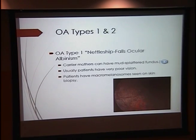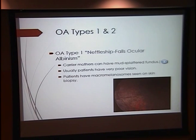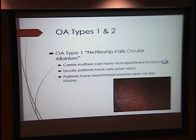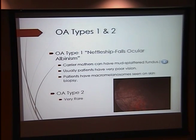Ocular albinism has two types. Type 1, also known as Nettleship-Falls ocular albinism, is inherited in an X-linked recessive pattern, so it is mostly a disease of males. Carrier mothers can have what is described as a mud-splattered fundus. These patients have very poor vision, and diagnosis is made by visualizing macromelanosomes on a skin biopsy. OA type 2 is also very rare and inherited in an X-linked recessive fashion.